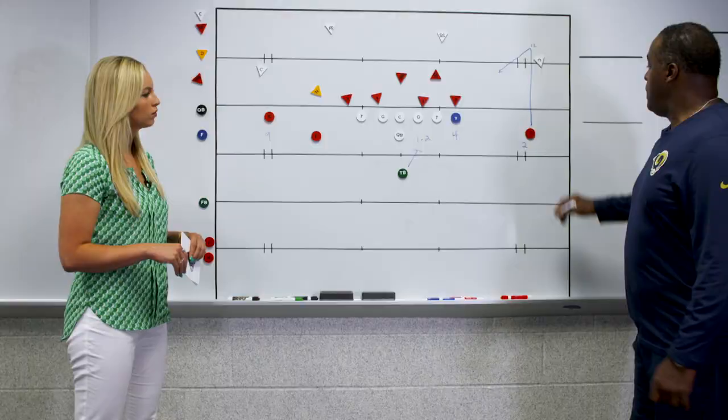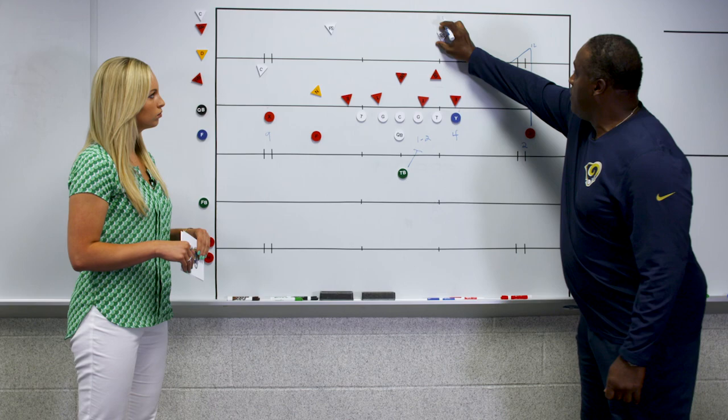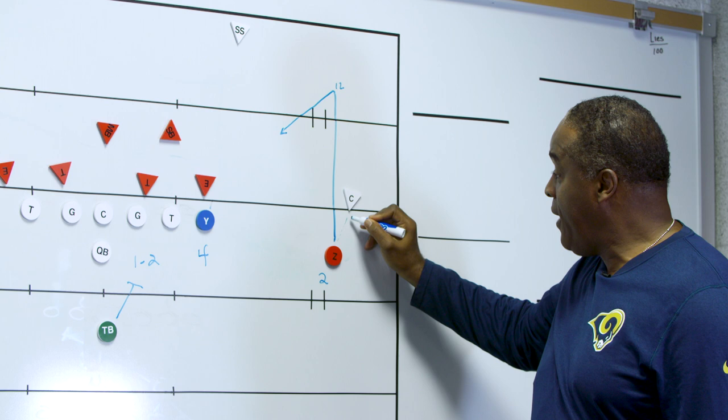If it's a roll corner giving us a cover-two look with a half-field safety, what he would do is alter his release a little bit, widening the corner and slipping him back inside, then getting back on track, pushing up 12 yards, and coming back to the quarterback.